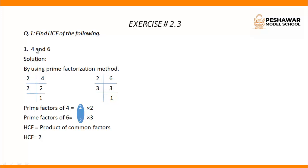First of all, write 4. Divide 4 by 2 — 2 twos are 4. Again, this 2 is divisible by 2 — 1 times 2 is 2. It means that the prime factors of 4 are 2 cross 2.